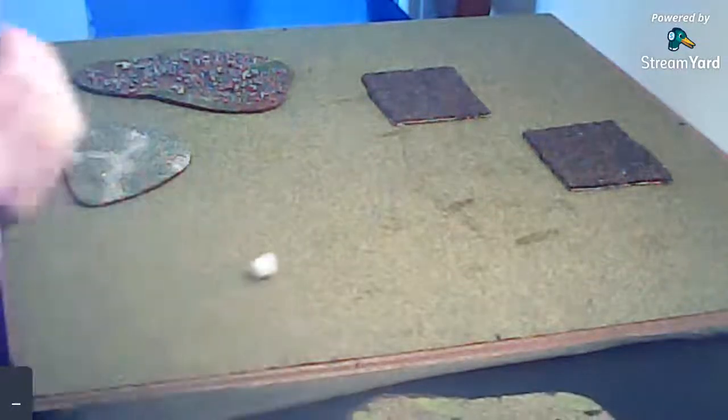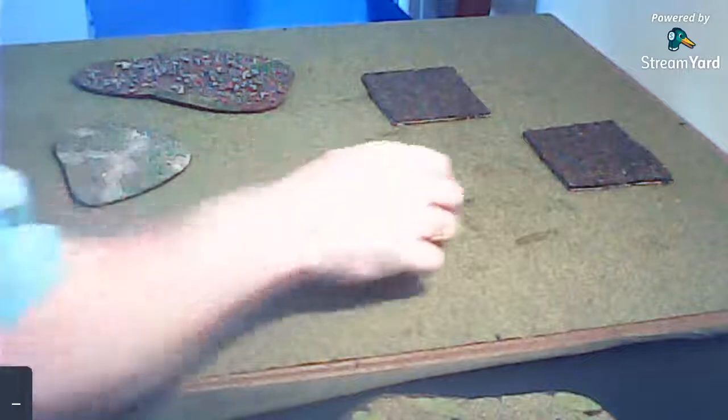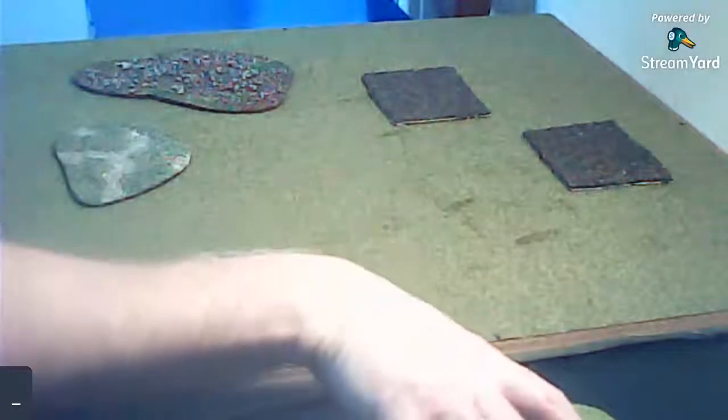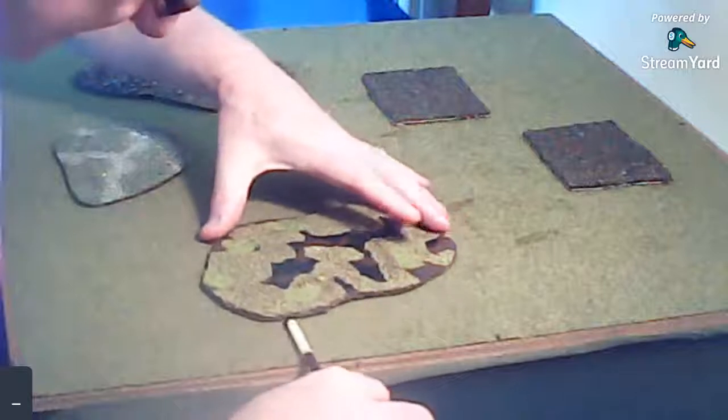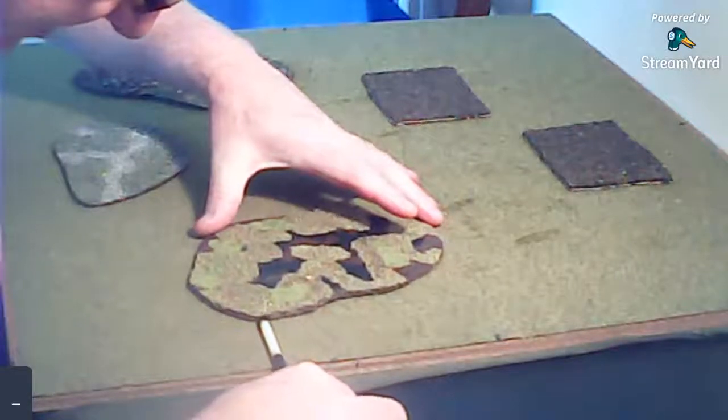And the final piece, the marsh, is number four, which is all the way over here. So this is a very crowded table in comparison.